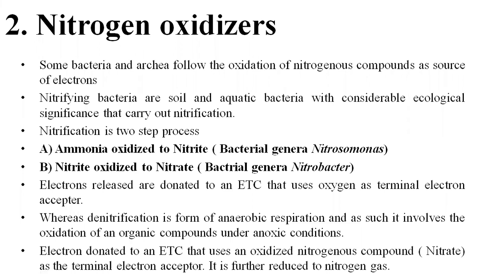Nitrogen oxidizers: some bacteria and archaea follow the oxidation of nitrogenous compounds as a source of electrons. Nitrifying bacteria are soil and aquatic bacteria with considerable ecological significance; they carry out nitrification. Nitrification is a two-step process: ammonia is oxidized to nitrite, and nitrite is oxidized to nitrate. The first step is carried out by the bacterial genus Nitrosomonas, and the second step by Nitrobacter. The electrons released are donated to an electron transport chain that uses oxygen as the terminal electron acceptor.